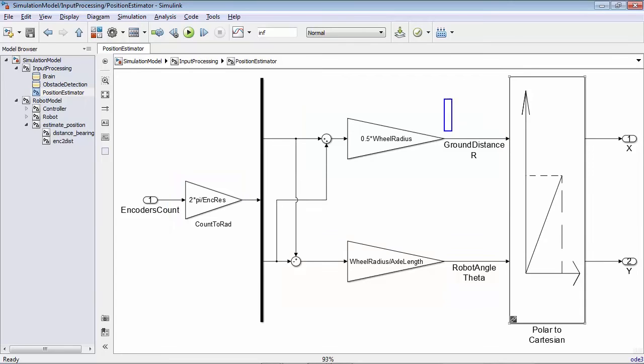At this stage, we have two values, r and theta, which are the polar coordinates of the robot expressed in the absolute map coordinate system. They just need to be transformed into Cartesian x, y coordinates. And we are done!